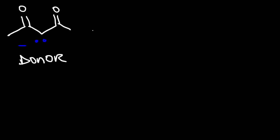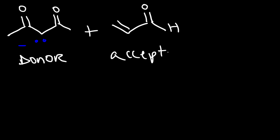The Michael donor is a stabilized enolate ion — essentially a nucleophile. It reacts with the Michael acceptor, which in this example is the alpha-beta unsaturated aldehyde serving as an electrophile. The carbon with the negative charge attacks the beta carbon, causing the pi electrons to move to the adjacent bond, breaking that pi bond.